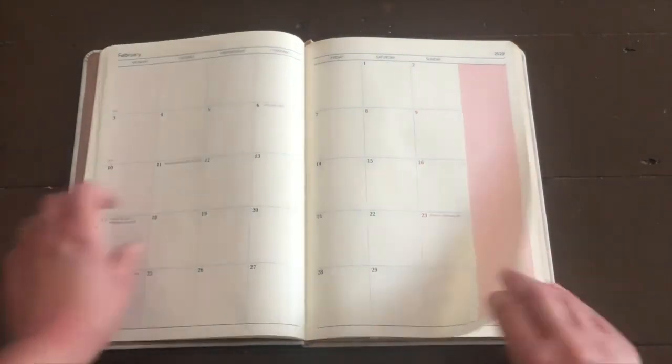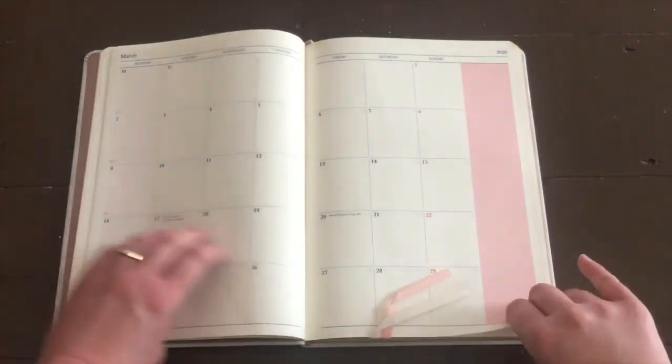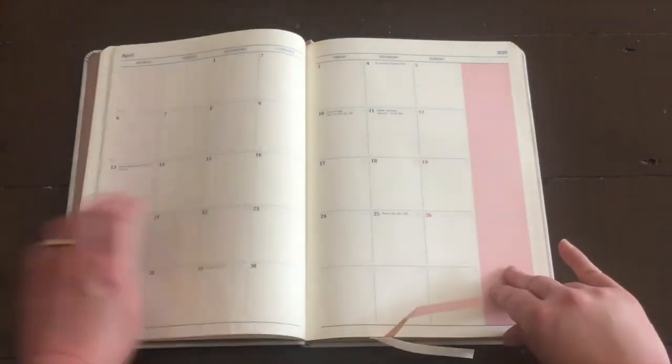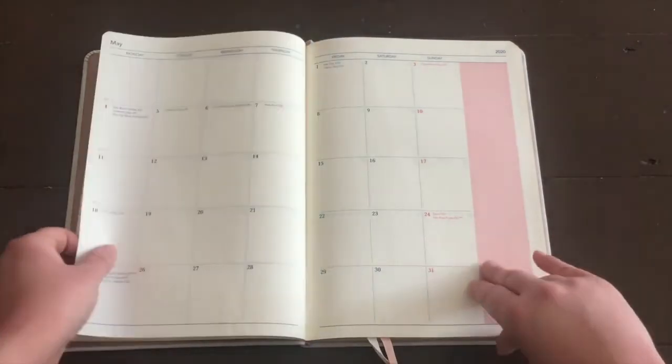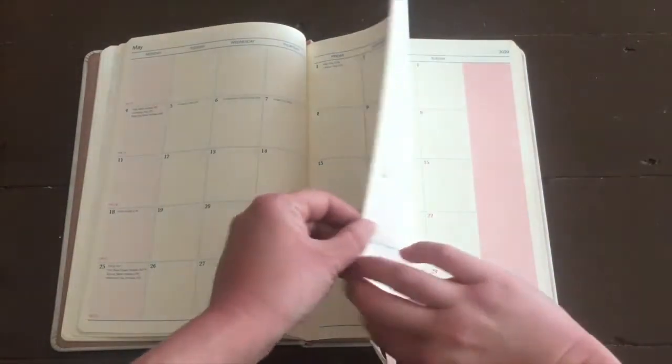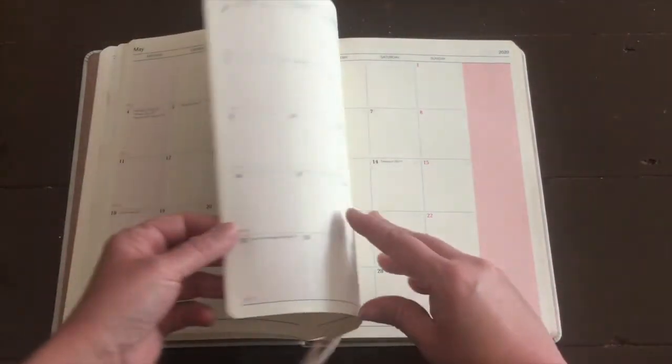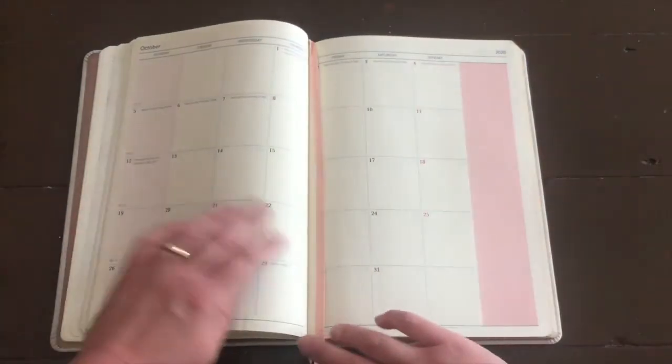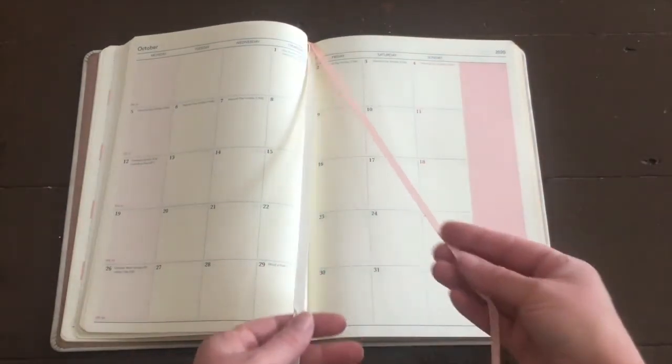In your month by month pages, you have big spaces, nice big boxes to write in and a beautiful red column on the right hand side so that if you have notes for that week or important to-dos or something that you don't want to forget about, you can put it in that section and your eye is immediately drawn to it and you take a look.